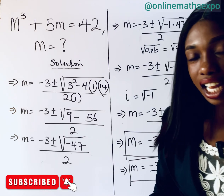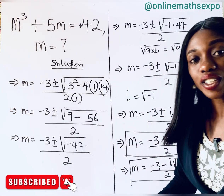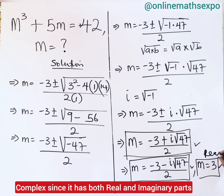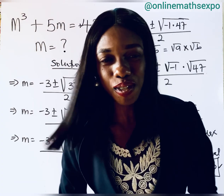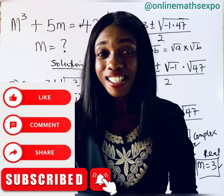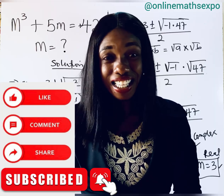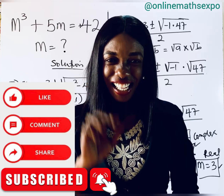We have three solutions: m = 3 is the real solution, while m = (−3 ± i√47) / 2 are the complex solutions. I hope this helps! Let us know in the comments, share the video to help others, subscribe for more, and see you in the next class!